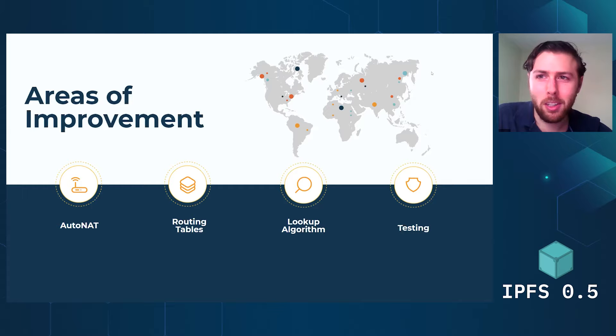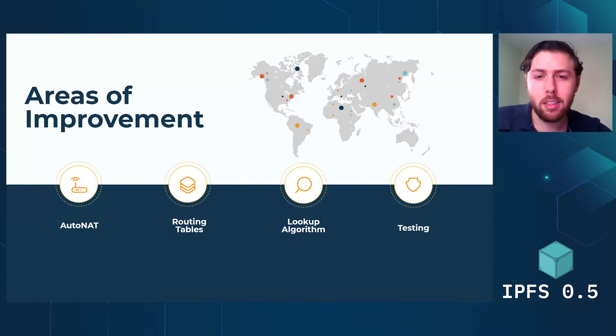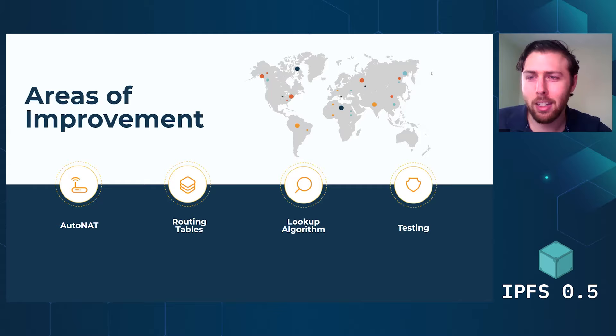One is the way in which the AutoNAT service that Stephen mentioned briefly is utilized by default in the DHT. The second is how we've cleaned up our routing tables. The third is the lookup algorithm — how you find stuff and how that's been improved. And then finally, a little bit of the testing and how we made sure that things are going to look good on the network.